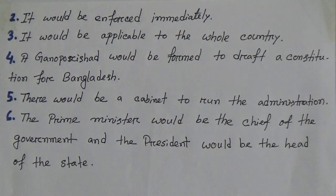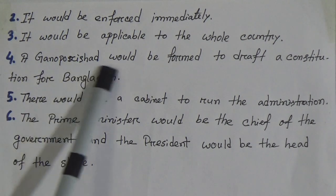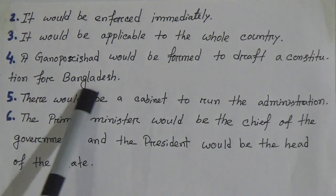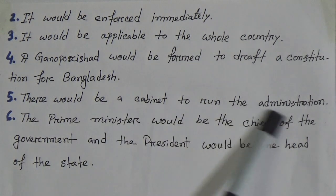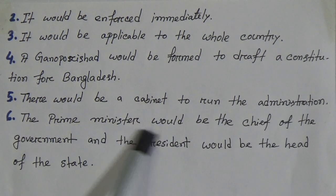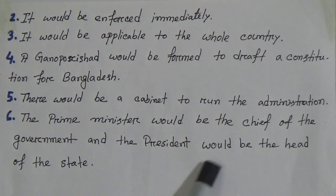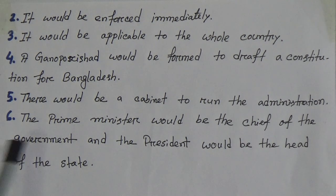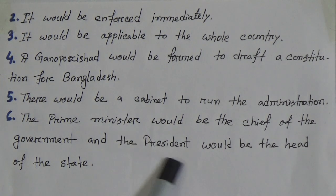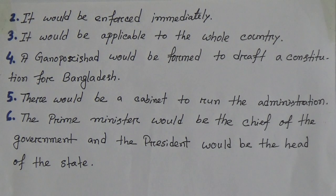That means this Constitution is not for a particular region but applicable to the whole country. Number five, there would be a cabinet to run the administration. Number six, the prime minister would be the chief of the government and the president would be the head of the state. So there are two posts: the prime minister runs the government, while the president is the head of the state.